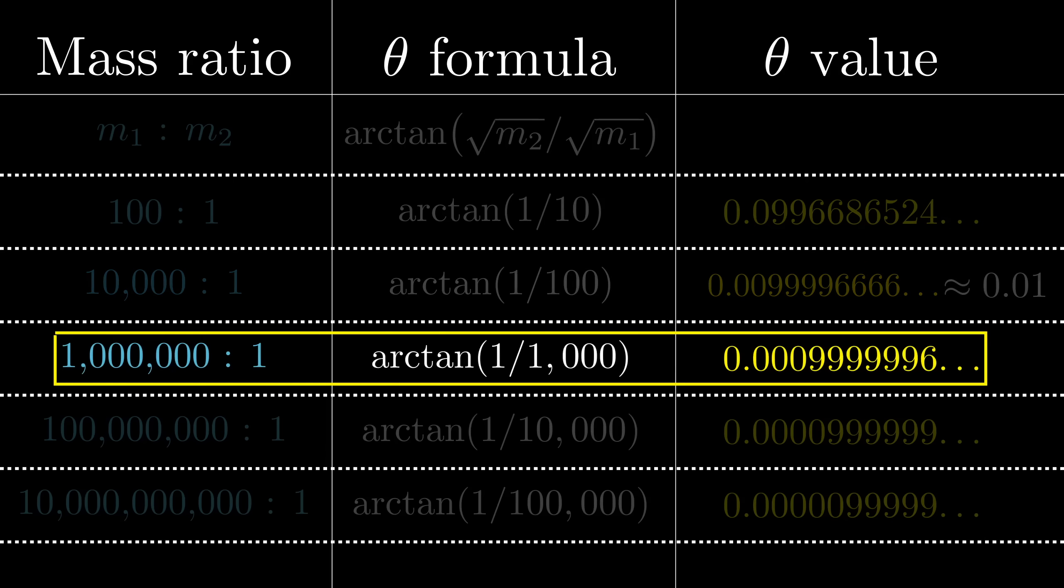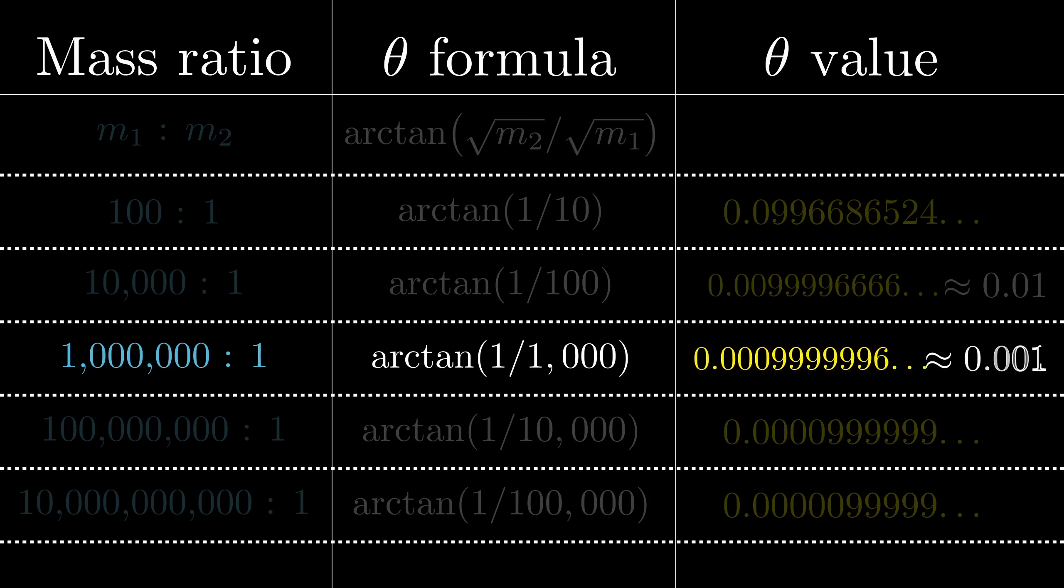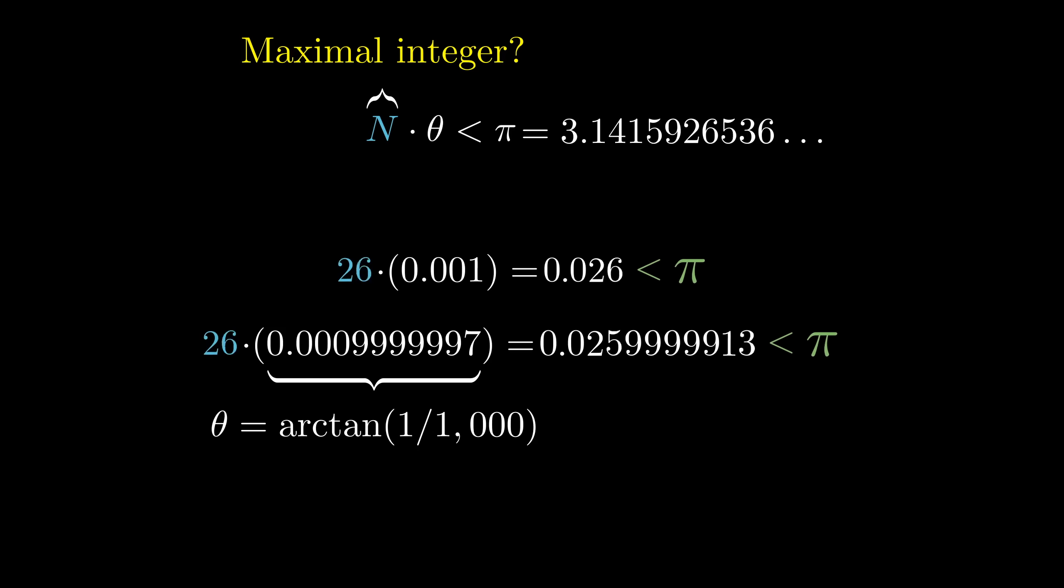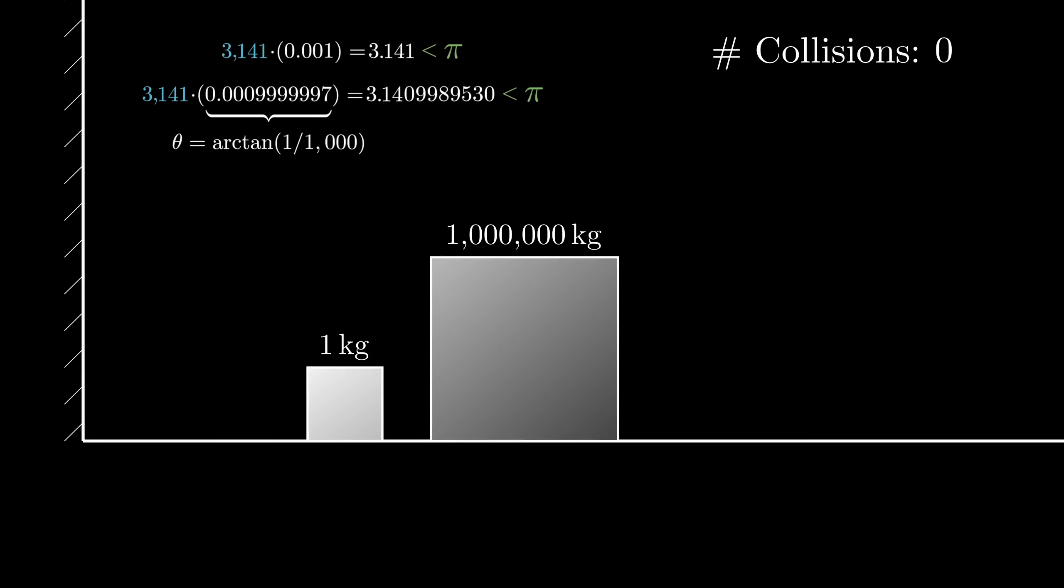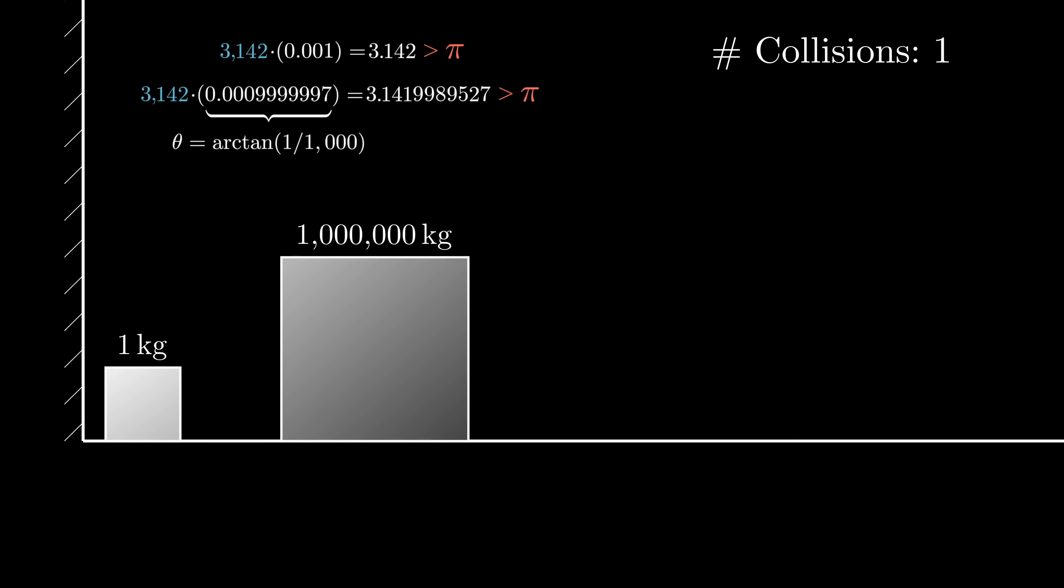Likewise, a mass ratio of a million to one will give an angle theta equals the inverse tangent of one over a thousand. This is extremely close to 0.001. And again, if we ask about the largest integer multiple of this angle that doesn't surpass pi, it's the same as it would be for a precise value of 0.001, namely 3141. These are the first four digits of pi because that is, by definition, what digits of a number mean. This explains why when the mass ratio is a million, the number of collisions is 3141.